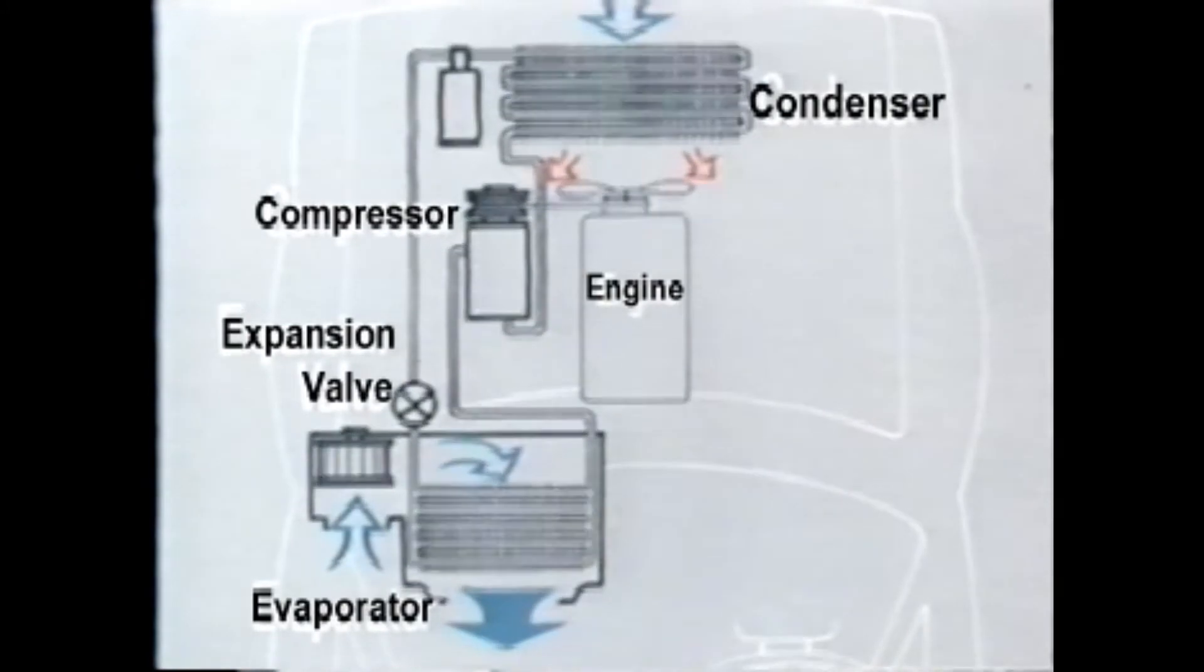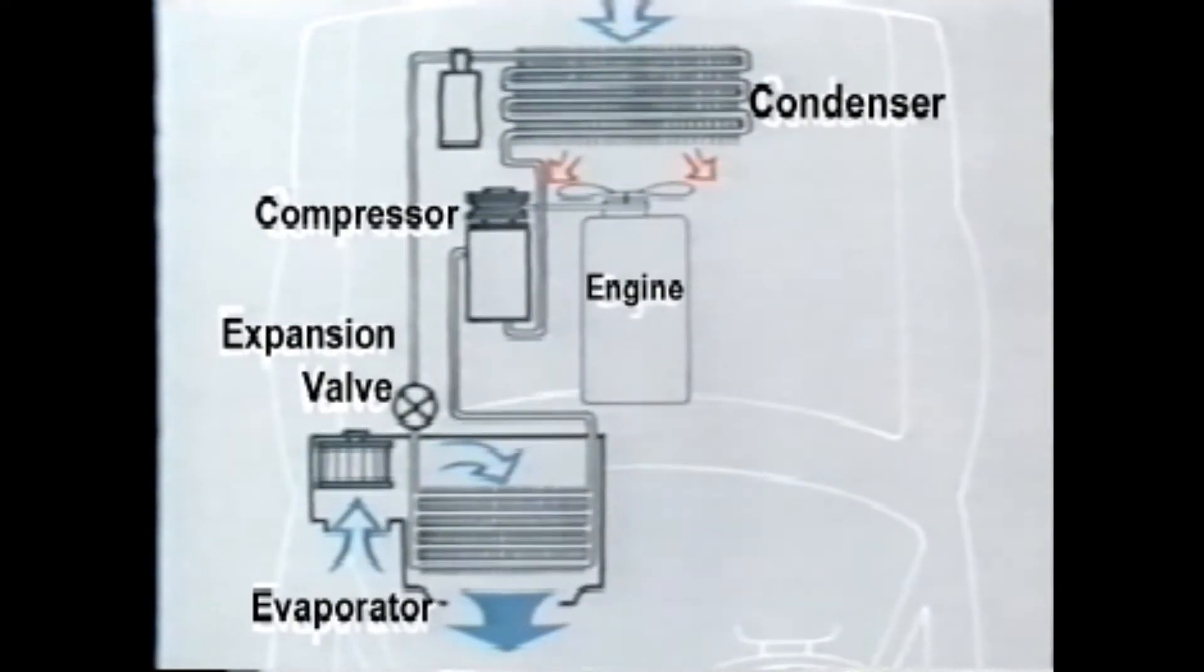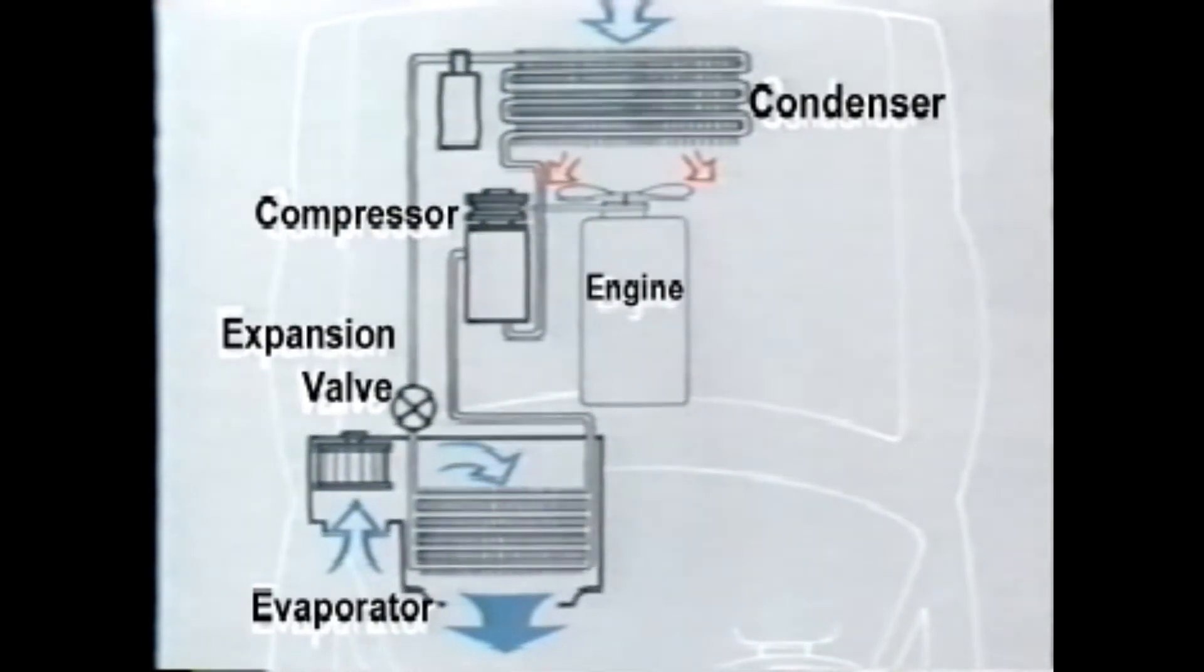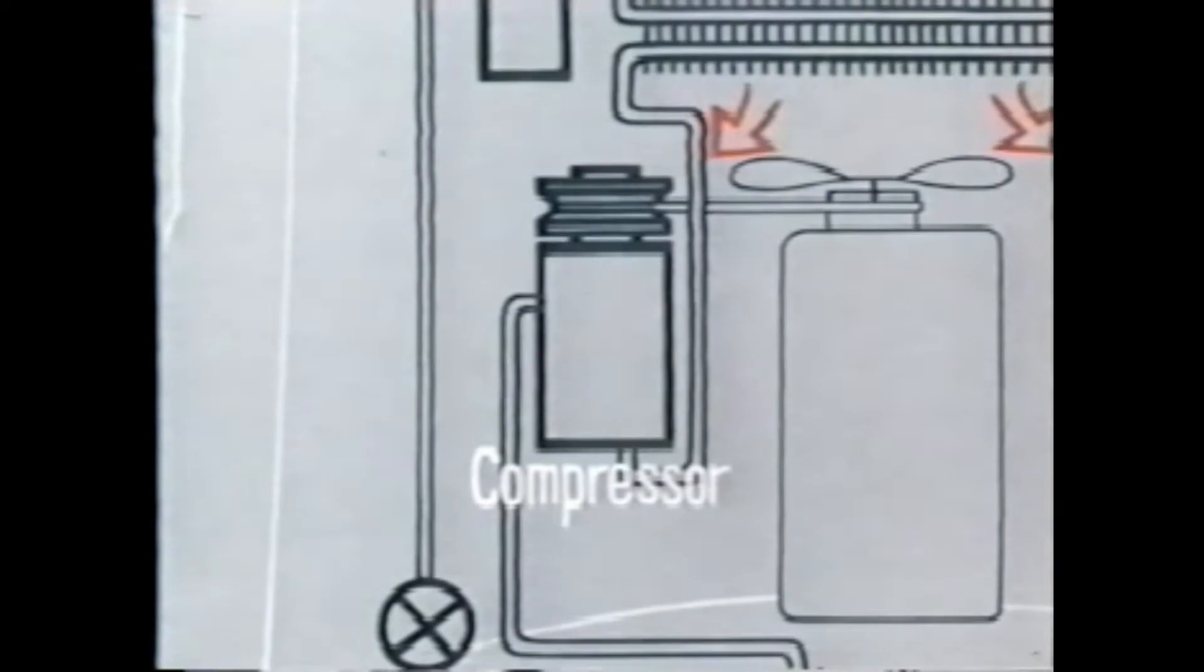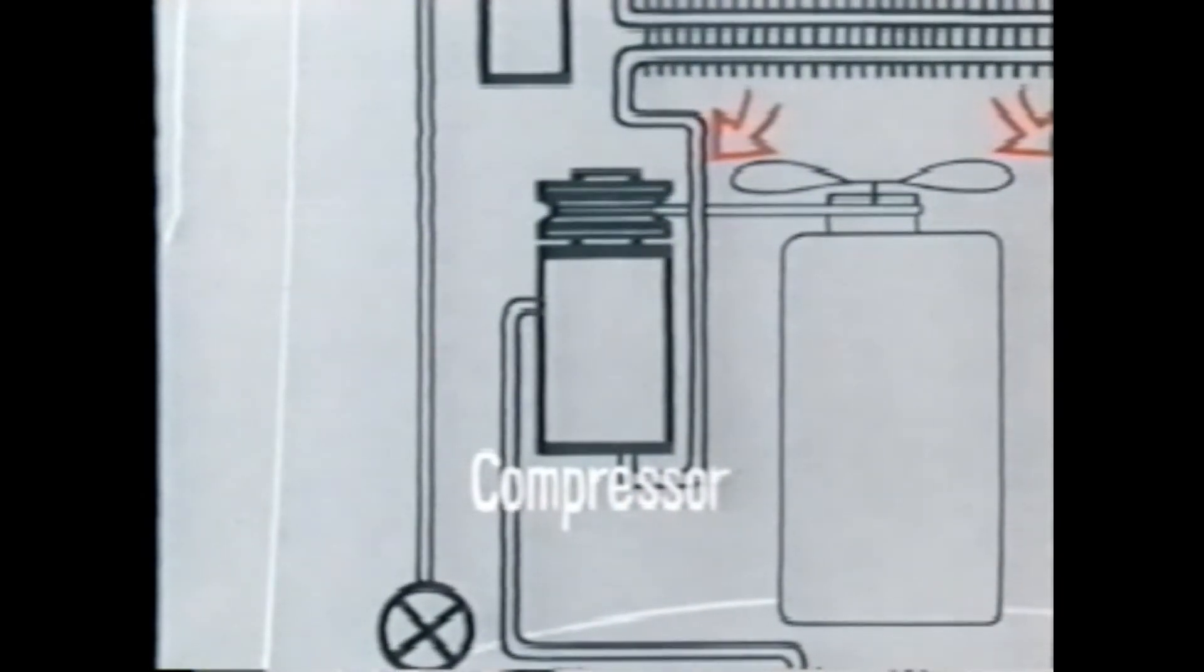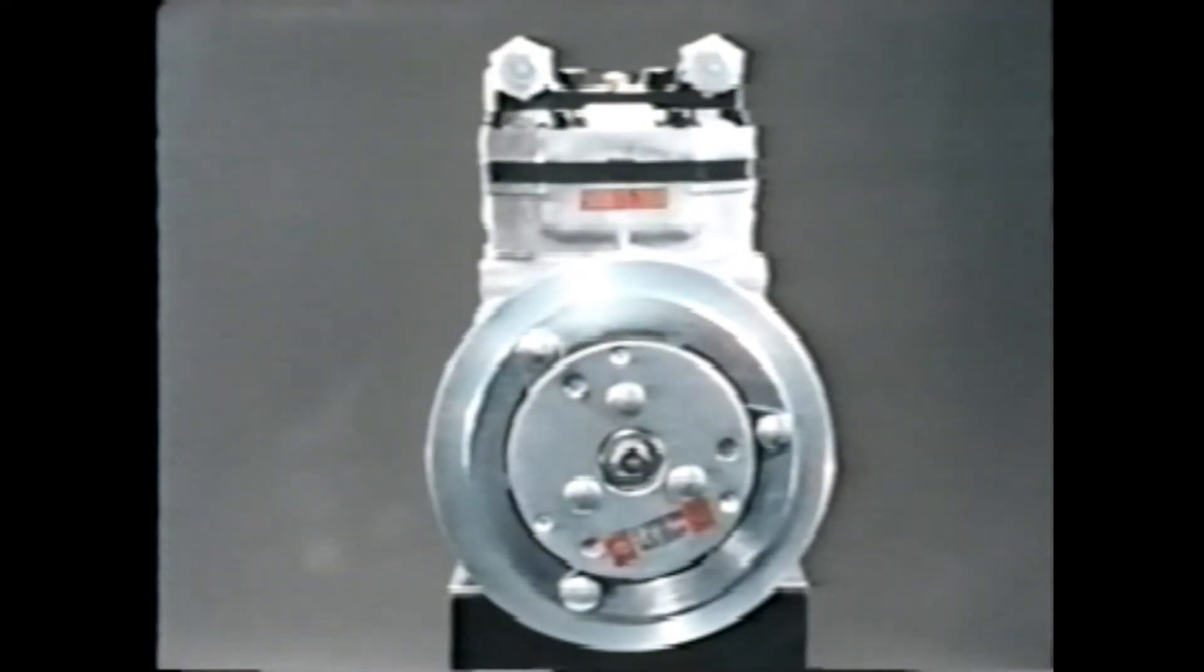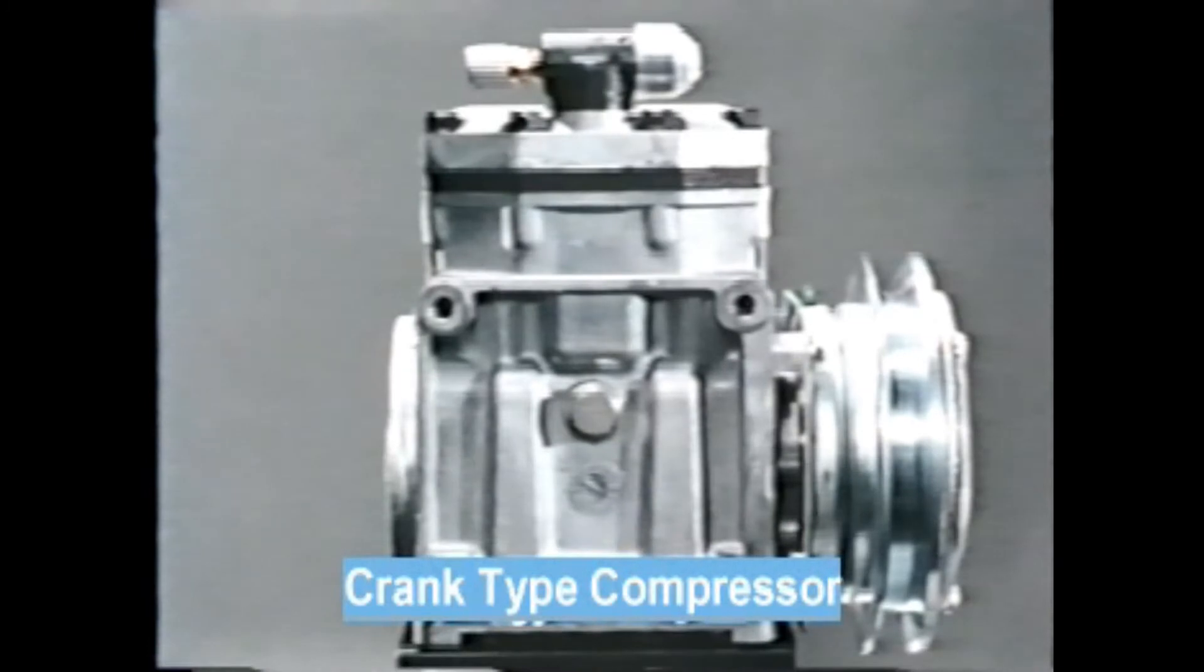As you'll see, a refrigerating system is mounted on a car. Now let's take a brief look at each of the devices. The compressor is driven by the engine with a V-belt to circulate the refrigerant. The compressor compresses the refrigerant and sends it to the condenser, facilitating its condensation at the ambient temperature.